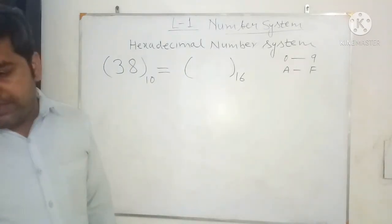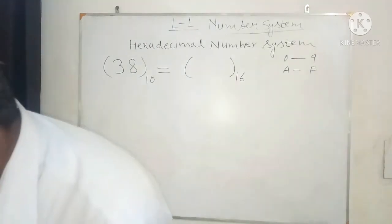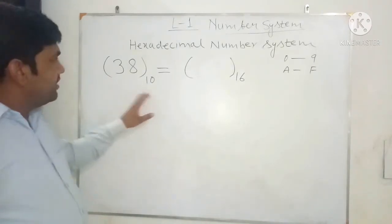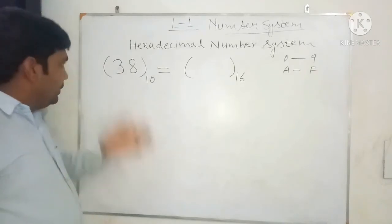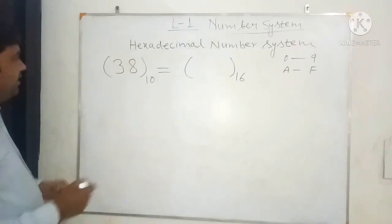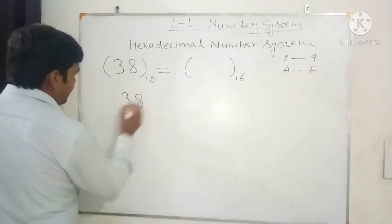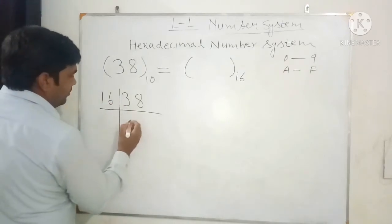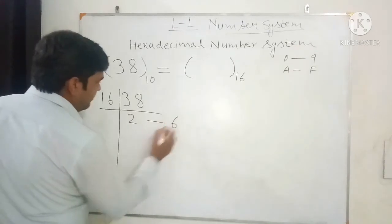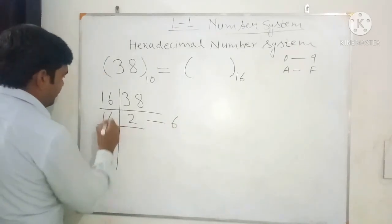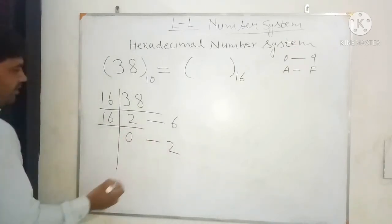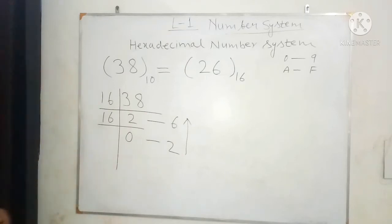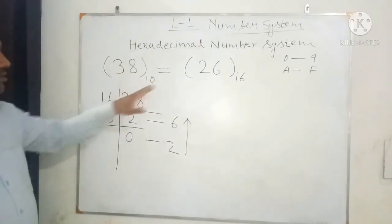For the number 38, we divide by the base 16. 38 divided by 16 gives a quotient of 2 and remainder 6. Next, 2 divided by 16 gives quotient 0 and remainder 2. Reading the remainders from bottom to top, the hexadecimal equivalent of 38 is 26.